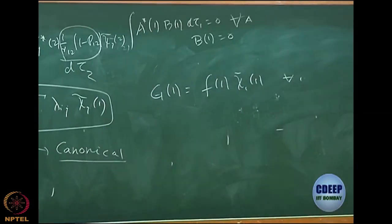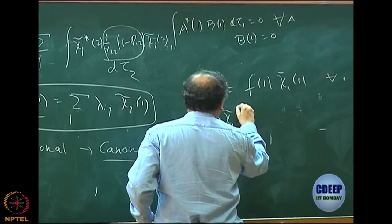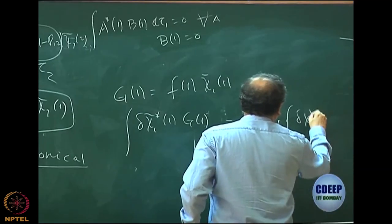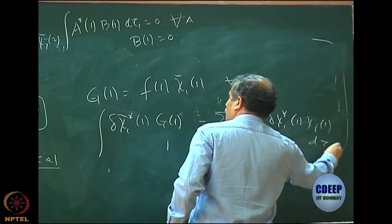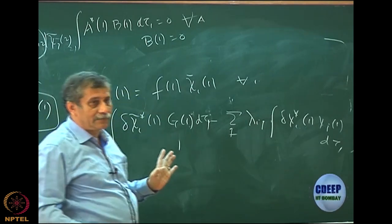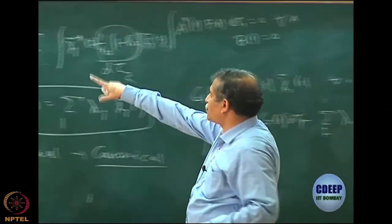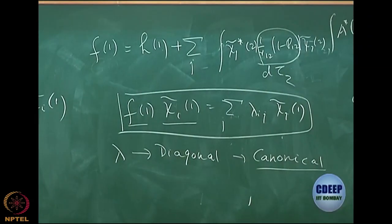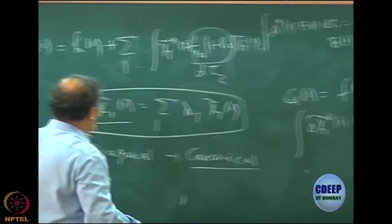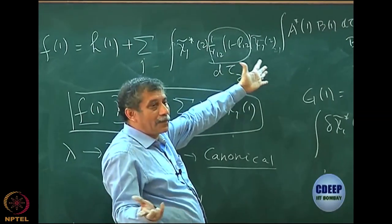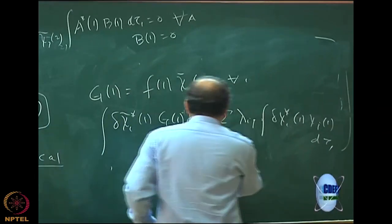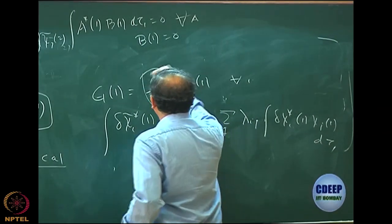The integrand G of 1 is nothing but an operator acting on chi i tilde 1, where the operator has H plus the Coulomb and exchange terms. You remember my final equation: delta chi i star 1 times G of 1, minus sum over j lambda_ij delta chi i star 1 chi j 1, equals zero. I am now saying this integrand is an operator times chi i tilde 1, where the operator contains h plus the exchange and Coulomb terms — which is basically contained in G, and that operator is called the Fock operator. The interpretation of the exchange is the difficult part.